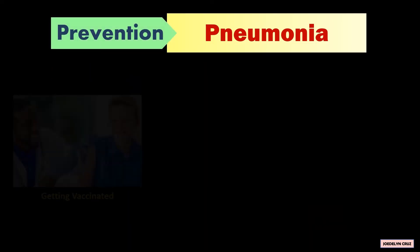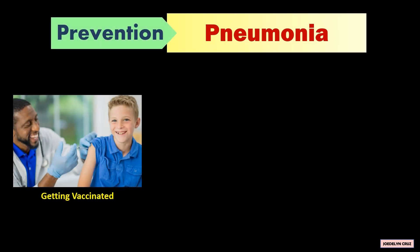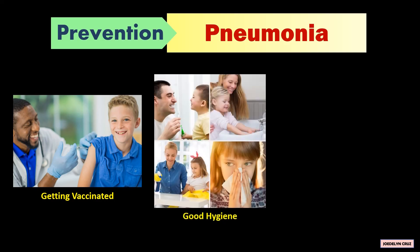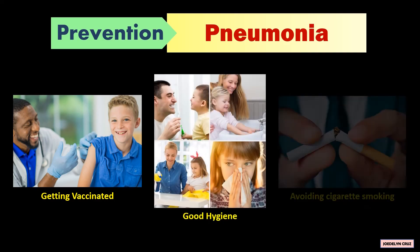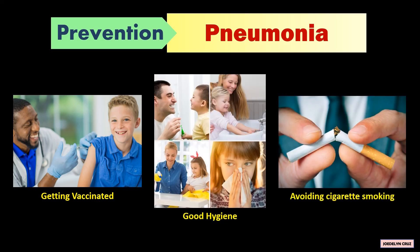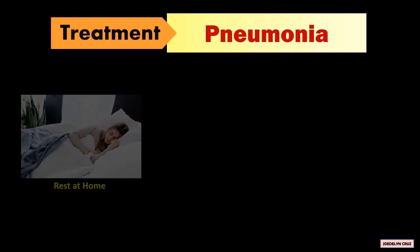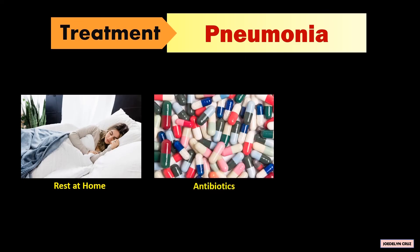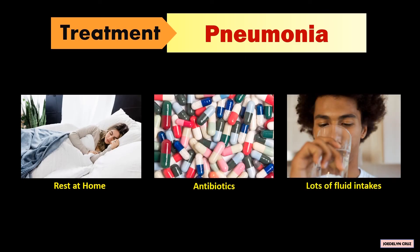Pneumonia can be prevented by getting vaccinated, practicing good hygiene, and avoiding cigarette smoking. Pneumonia can usually be treated at home with rest, antibiotics, and lots of fluid intake.